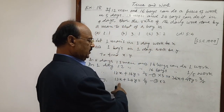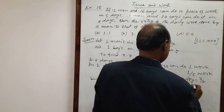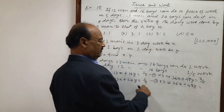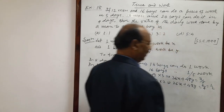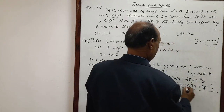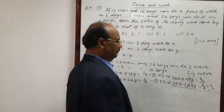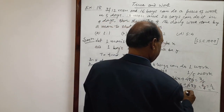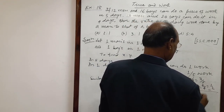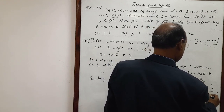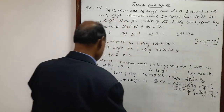And multiplying equation 2 by 2 gives: 26X plus 48Y equals 2 into 1 by 4, which is 1 by 2. Now let us subtract these two equations. The 48Y terms cancel out, and here we are getting 10X. So 10X equals 3 by 5 minus 1 by 2. The LCM is 10, giving 6 minus 5, which equals 1 by 10.